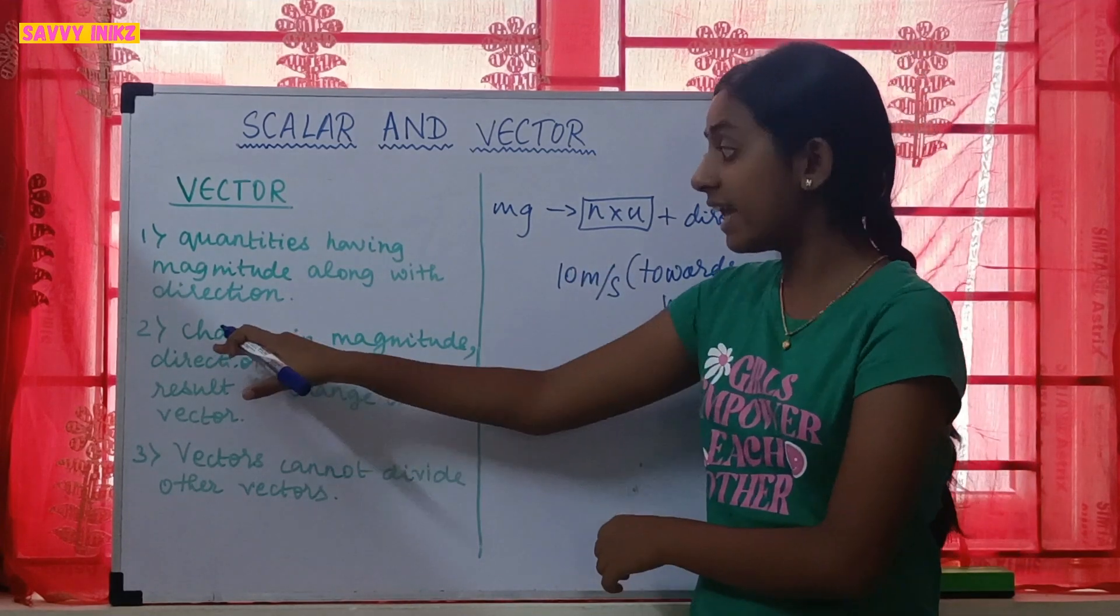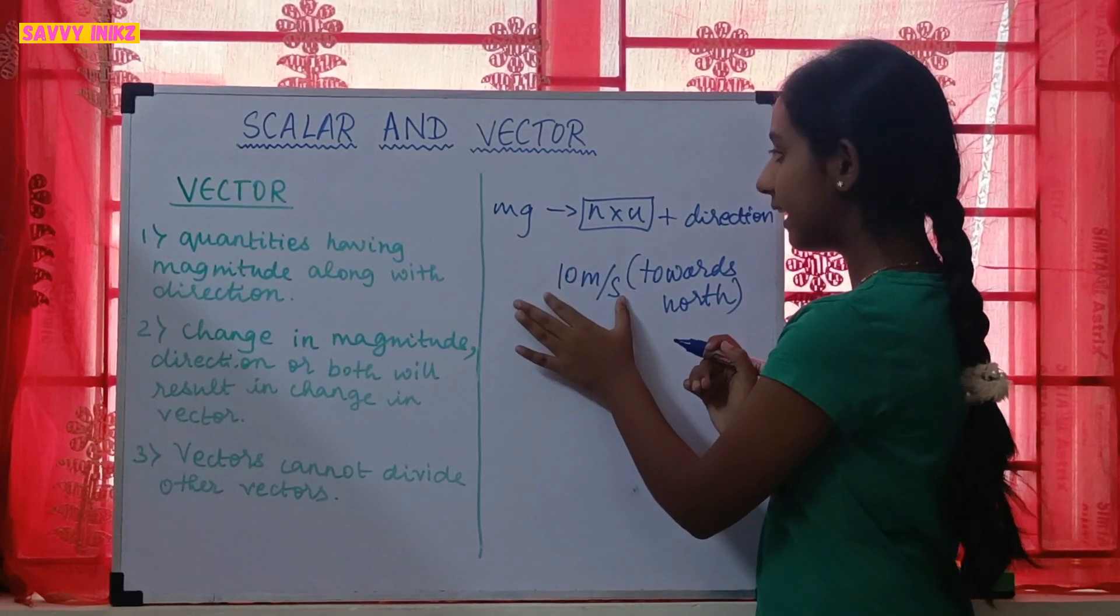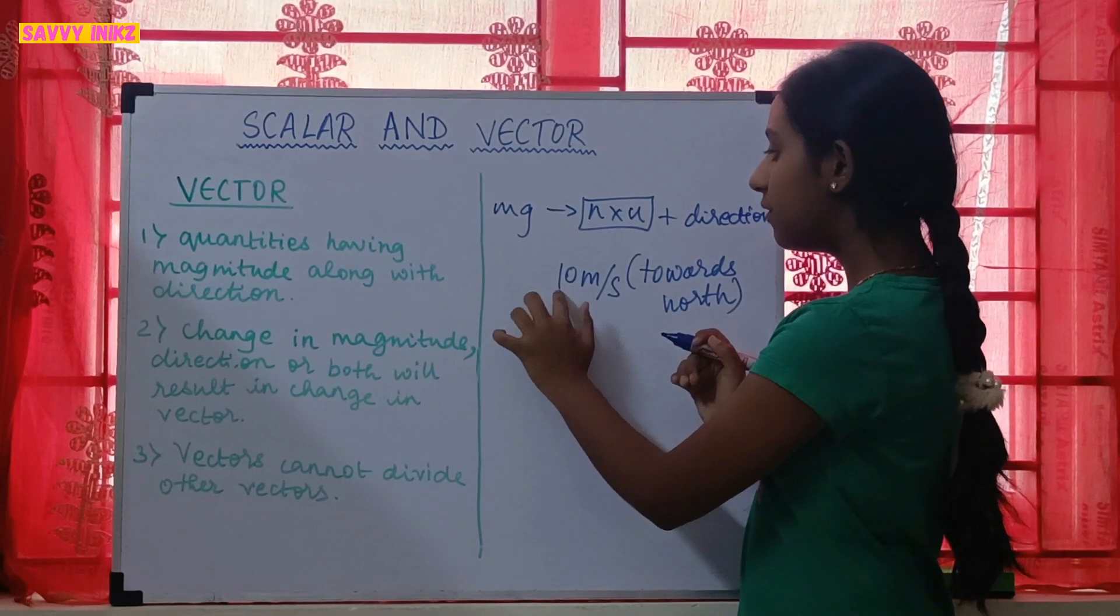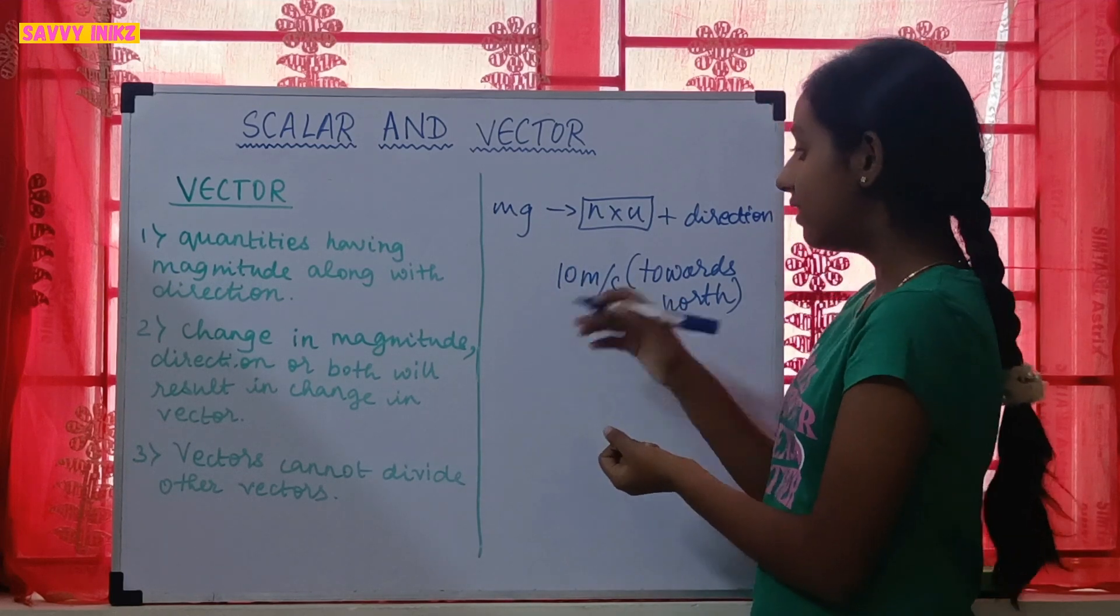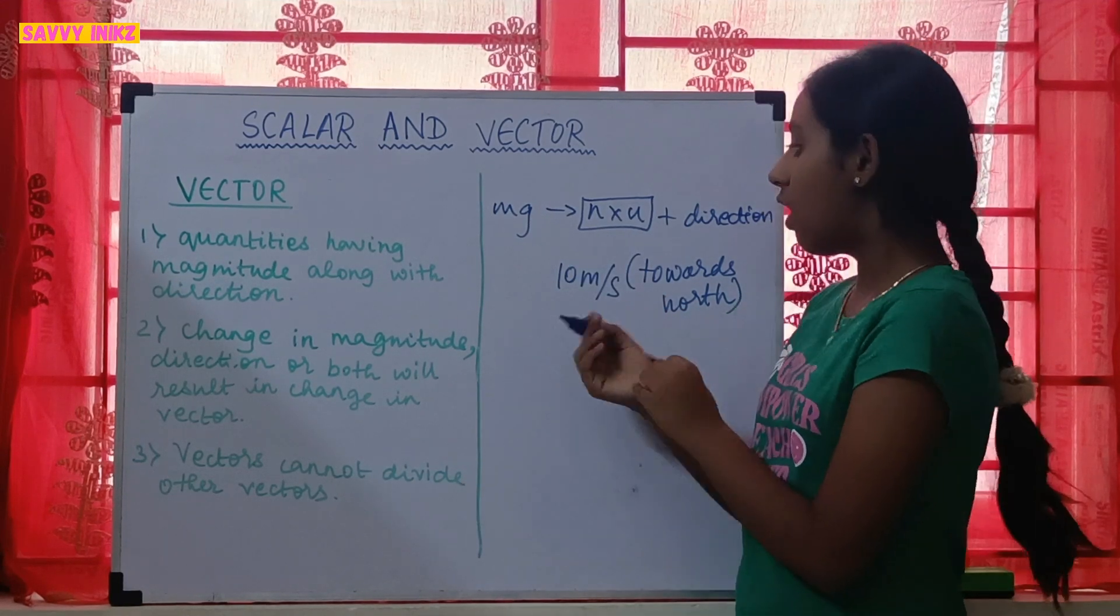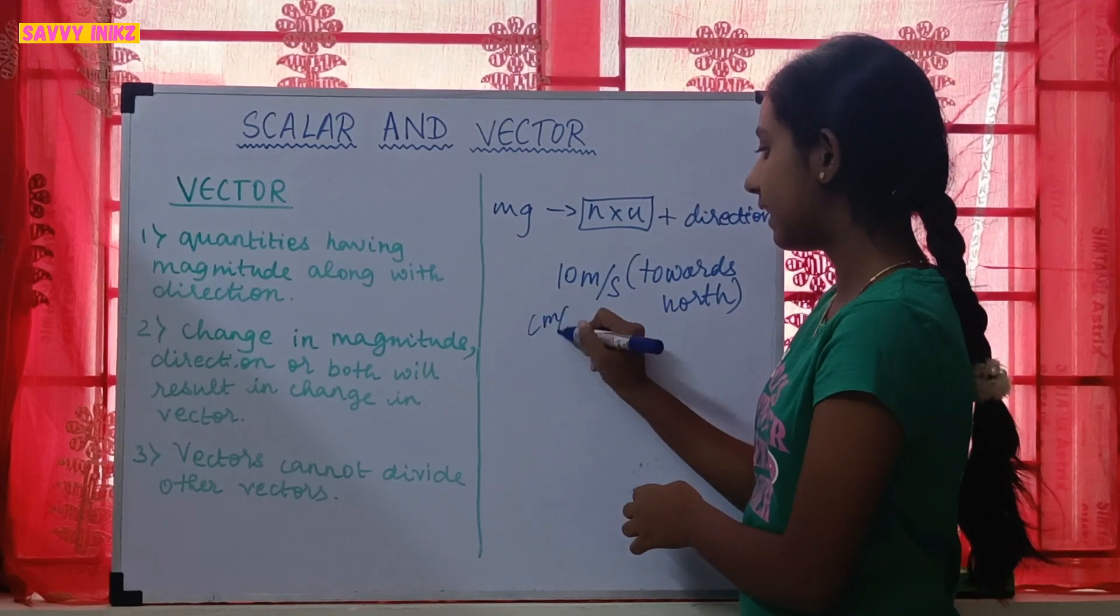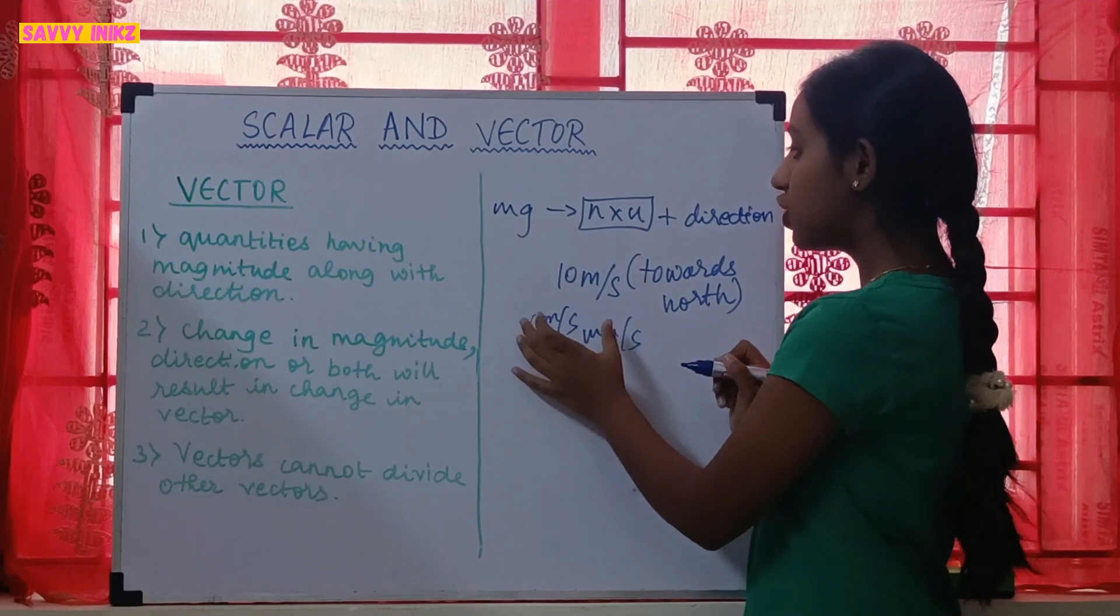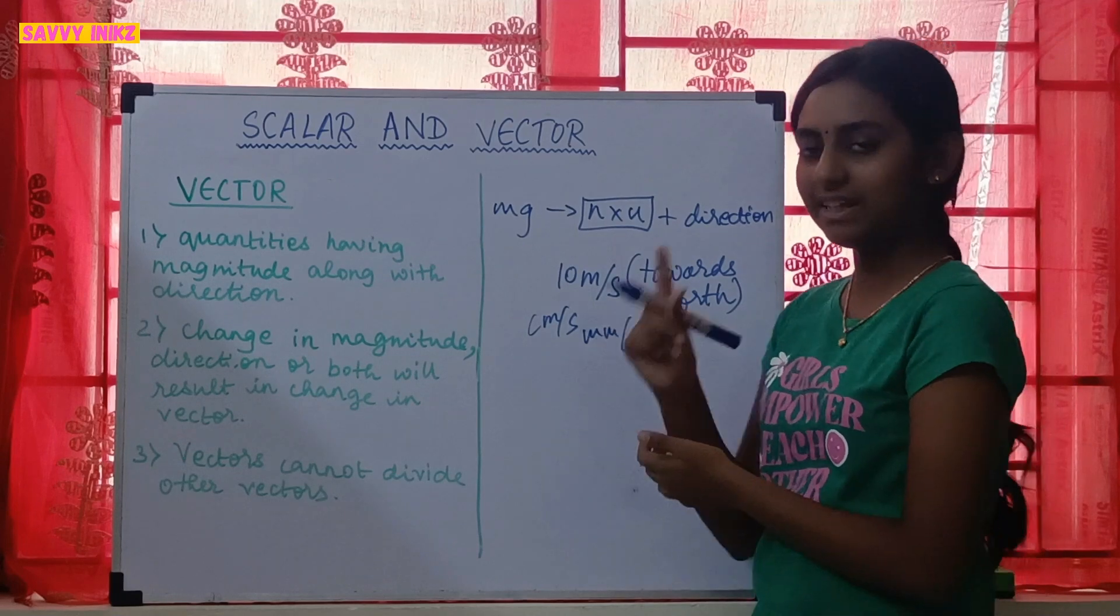So now this is a complete vector quantity. And to change the value of this vector quantity, the first is I can change the magnitude. So the magnitude is 10 meter per second. I can either change the value like the numerical value. I can change it as 12 or 11 meter per second. Then the vector quantity will change. Or I can change the unit as centimeter per second or millimeter per second. Like by changing the magnitude, I can change the value of the vector quantity. That is the first one.